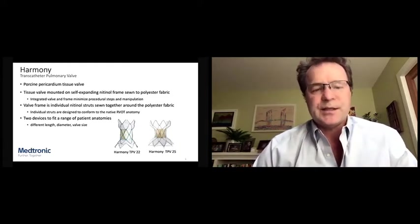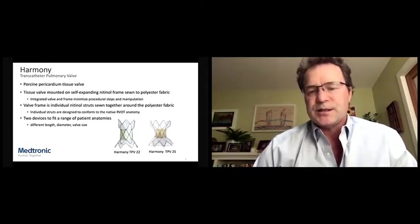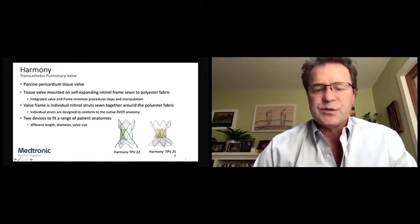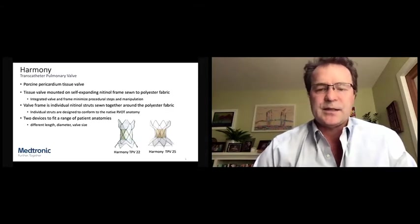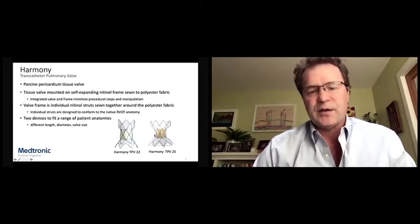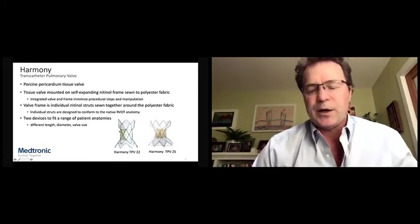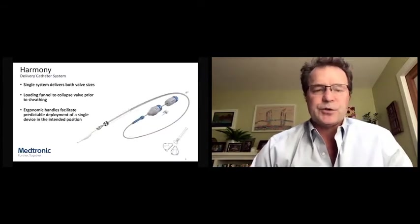So there's six rows in each of these devices that are sewn together. So they're articulated at these sutures. And it's designed to conform to the native right ventricular outflow tract anatomy. At present, there are two devices designed to fit a wide range of patient anatomies. These two devices listed here are the Harmony TPV22 and the Harmony TPV25. They differ both in length, diameter, and in valve size.